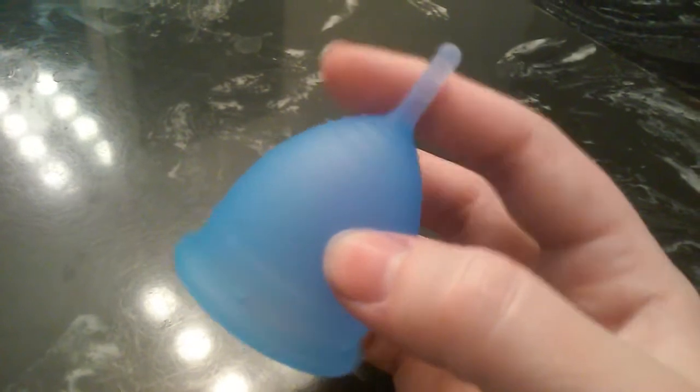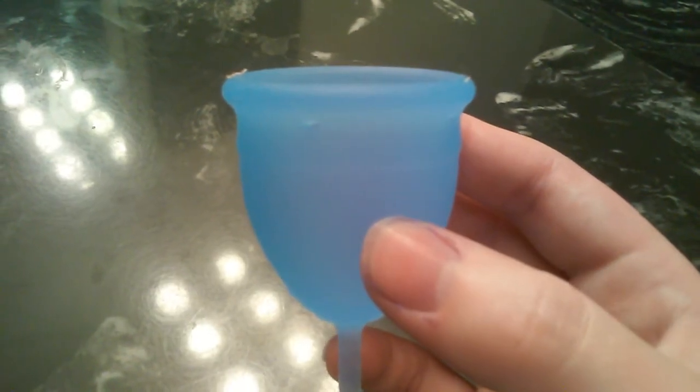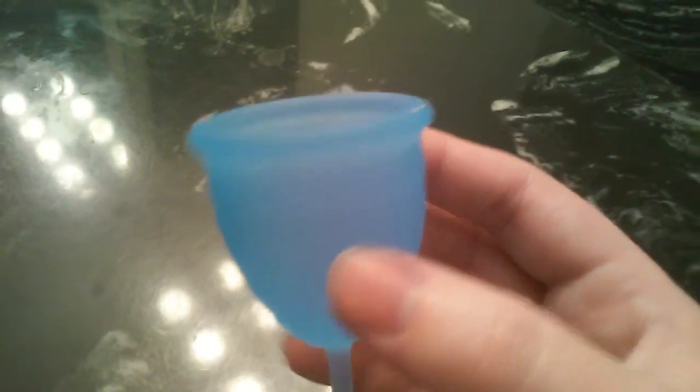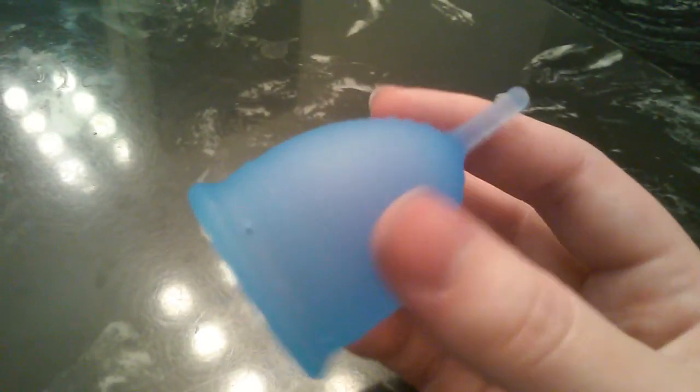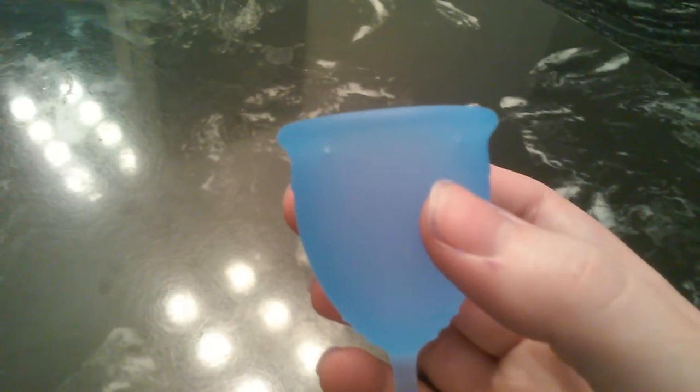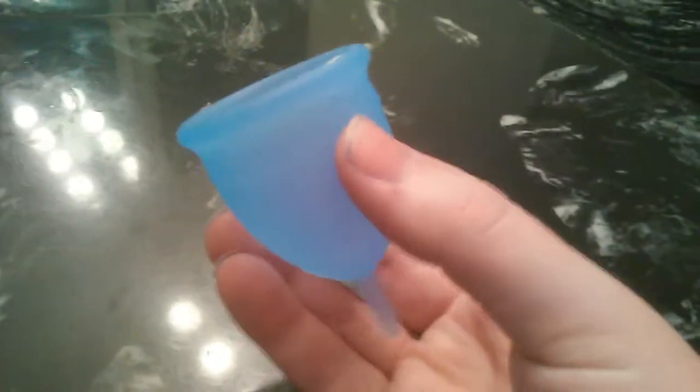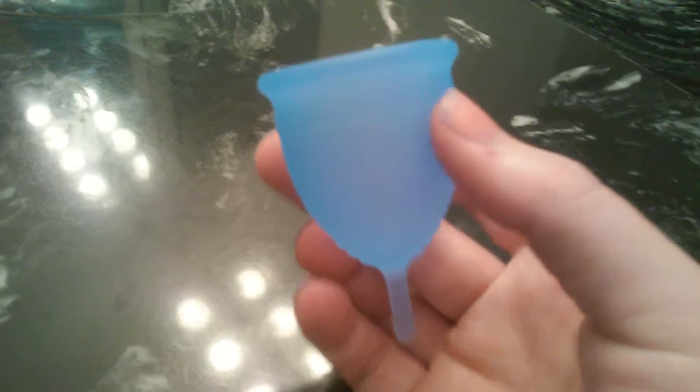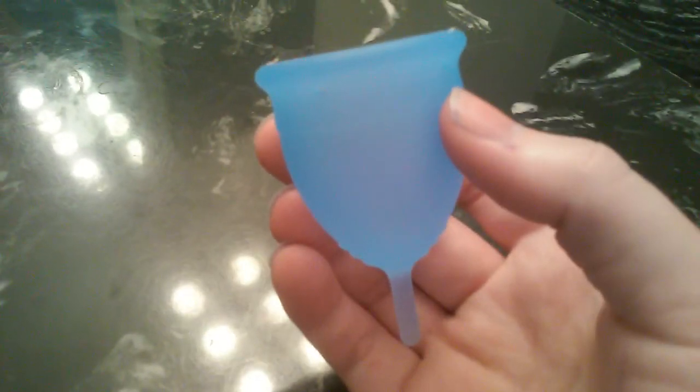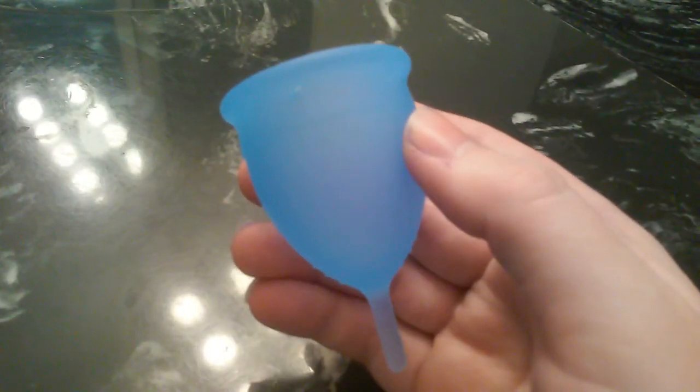Okay as you can see here's my cup. The size I have is the regular size. The Salt Cup comes in two sizes: a small size and a regular size. The small size has a capacity of 25 milliliters and the regular size has a capacity of 30 milliliters. This is the regular size. I usually go with the larger size menstrual cups for most companies so that's why I chose this size as I felt it would be a better fit for me.